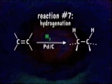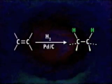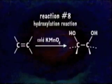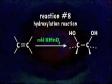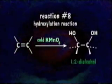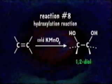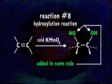Alkene addition reaction number seven: hydrogenation reactions. We introduce hydrogen gas to an alkene and a metal catalyst. The result is an alkane with two hydrogens added to the same side of the alkene double bond. We can also hydroxylate an alkene by adding OH groups to the double bond. In a hydroxylation reaction, two hydroxyl groups are added by cold potassium permanganate, forming a 1,2-diol. The two hydroxyl groups are added on the same side of the double bond — syn addition.